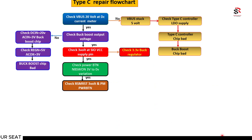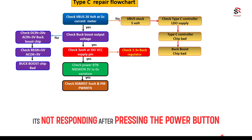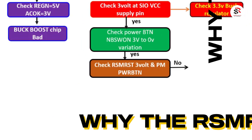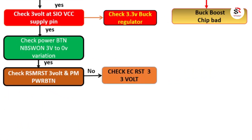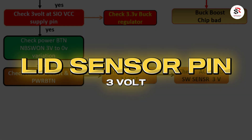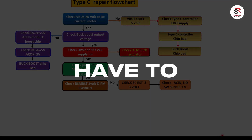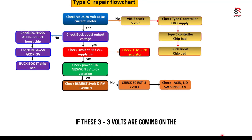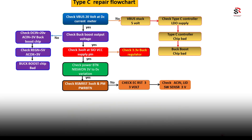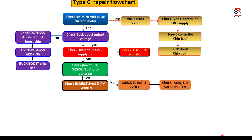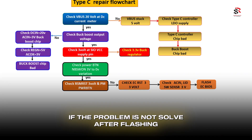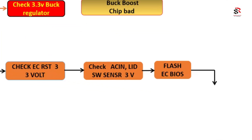The PM power button (sometimes called DNBS_W_ON) should also generate a 3-to-0-to-3V pulse, and RSM_RST should shift from 0V to 3V after pressing the power button. If RSM_RST stays at 0V and does not respond, check: EC reset (3V), AC-in signal (3V), and lid sensor switch (3V) — all at the SIO. If these three 3V signals are present but RSM_RST still doesn't shift, flash the EC firmware using an SIO programmer and recheck. If the problem persists after flashing, replace the SIO.